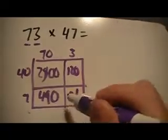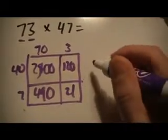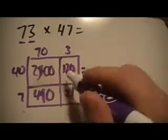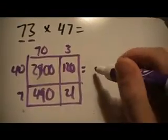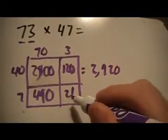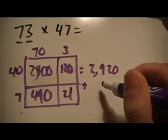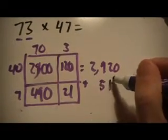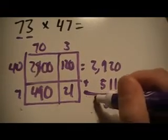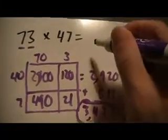They don't need to add in any particular order — they can go diagonal, across, whatever they need to do. A lot of kids typically go across, because then they set it up as an addition algorithm. So 2,800 plus 120 is 2,920, and then 490 plus 21 is 511. Add those up, and I get my answer of 3,431.